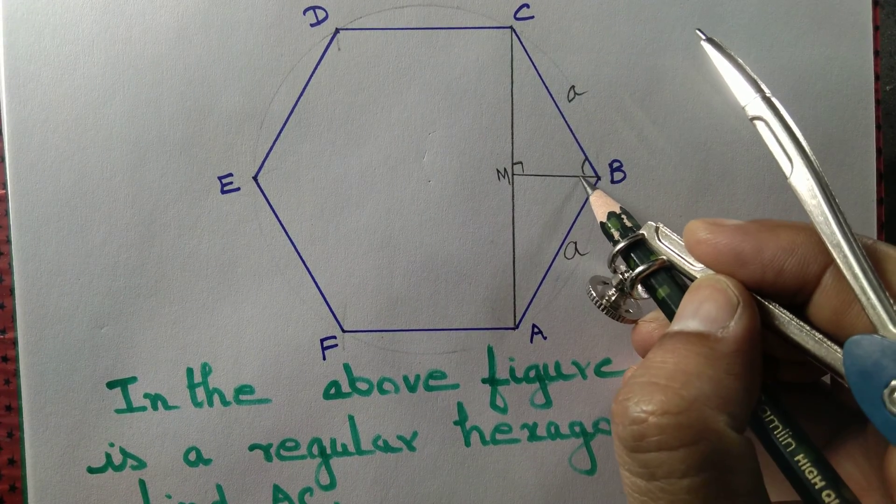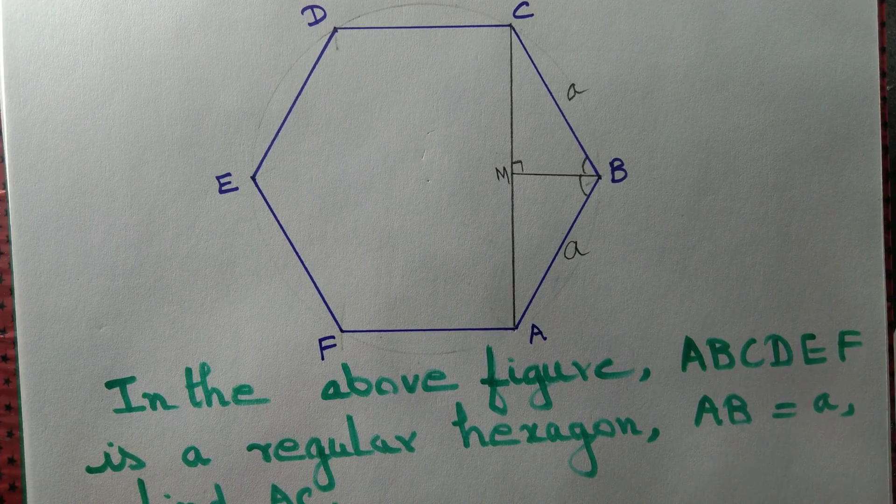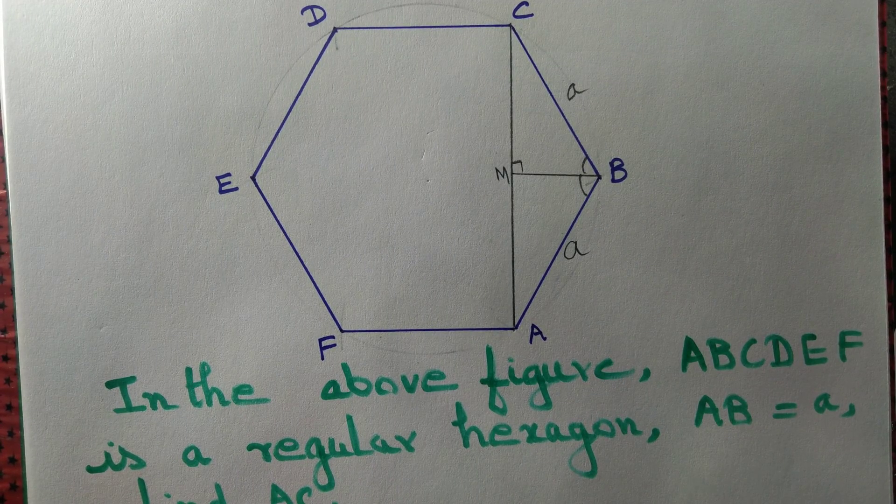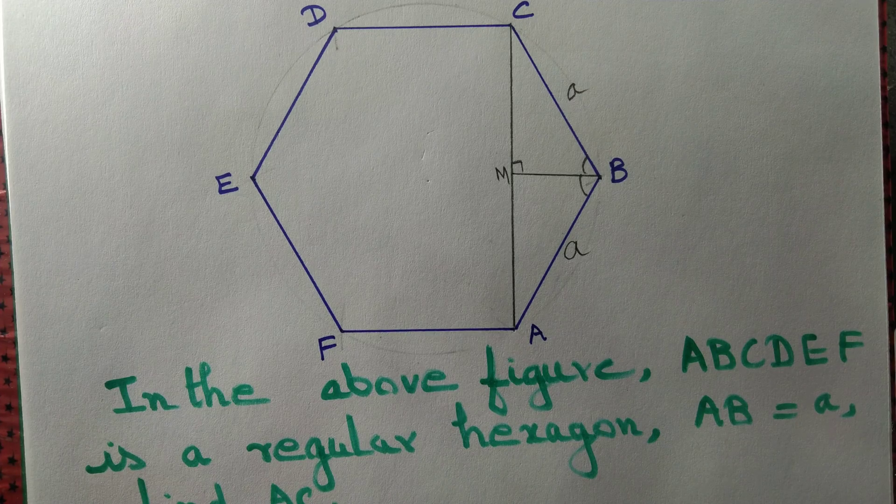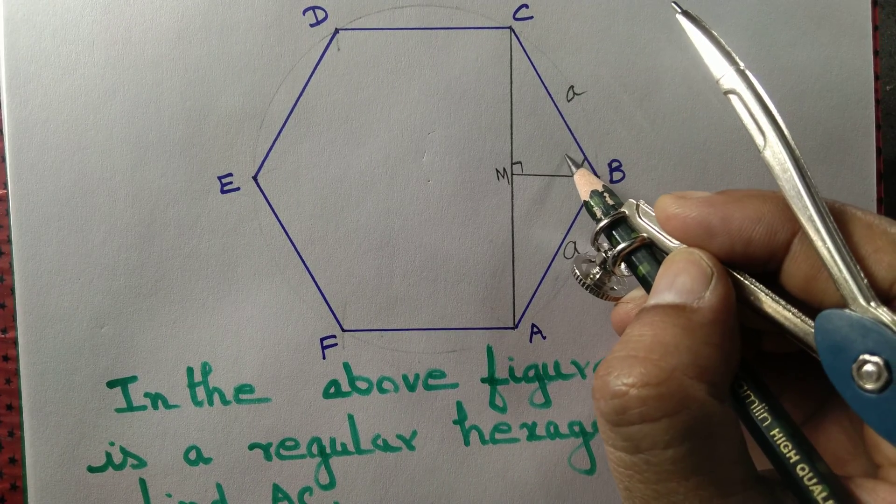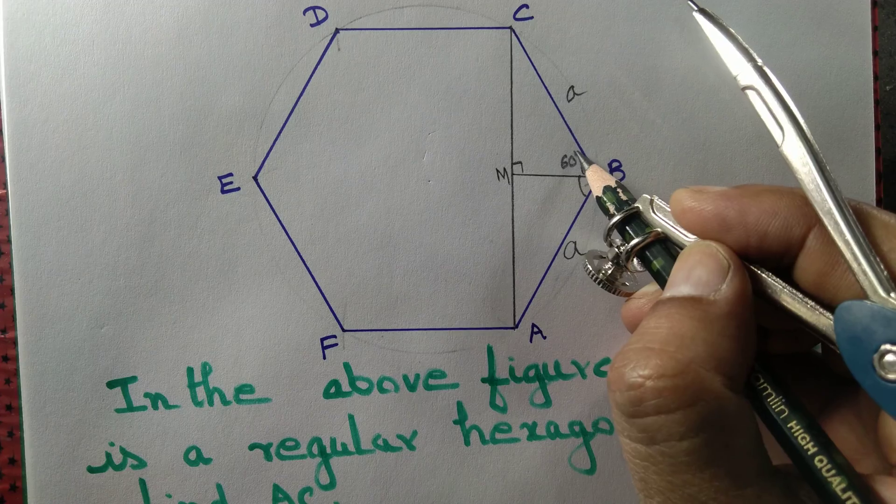These two angles must be equal. Angle B being the angle of a regular hexagon, it is equal to 120 degrees. So this angle must be equal to 60 degrees.